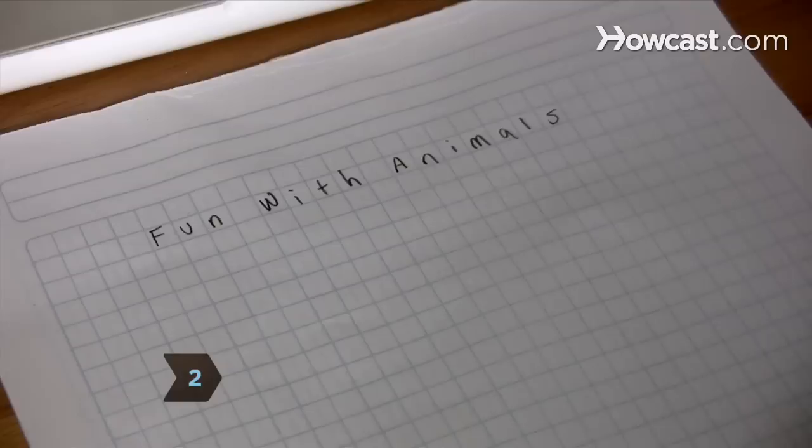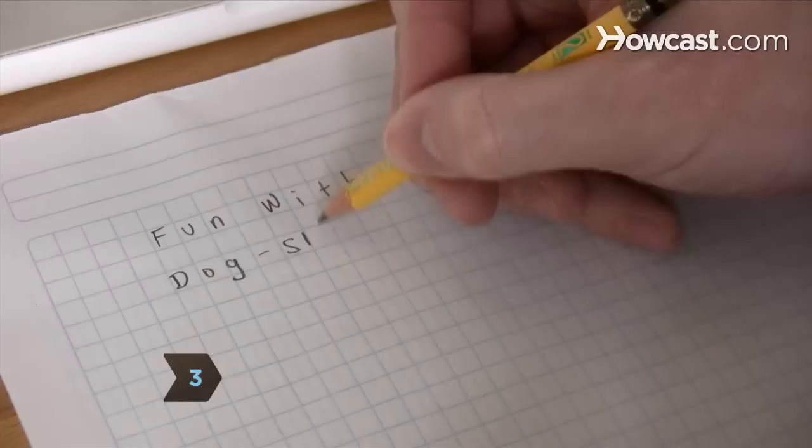Step 2. Choose a central theme to hang your crossword puzzle words and clues on. Step 3. Brainstorm words and clues from your puzzle's theme and write them on paper.